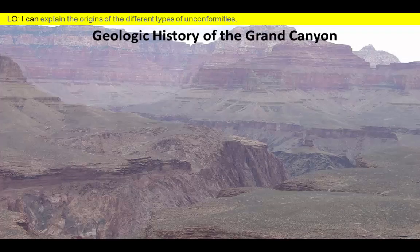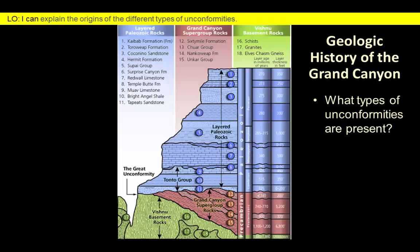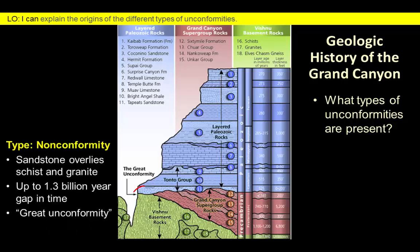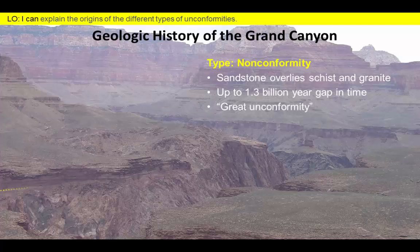Now let's examine another image from the Grand Canyon. It turns out there are two well-defined unconformities in this view — a nonconformity near the base of the section and a disconformity within the sedimentary rocks of the distant cliffs. At the base of the canyon we have igneous and metamorphic rocks overlaid by the Tapeats sandstone, which is an example of a nonconformity. This surface is known as the Great Unconformity because it separates fossil-bearing sedimentary rocks from much older rock units formed before fossils became abundant.